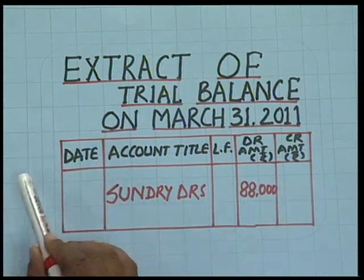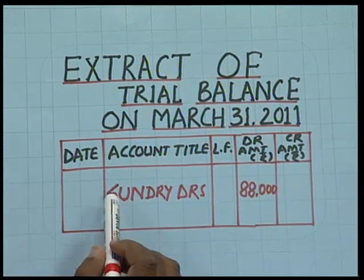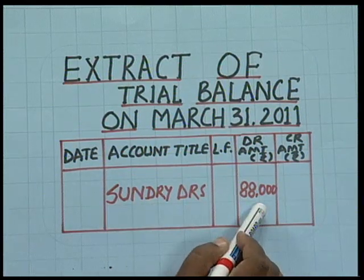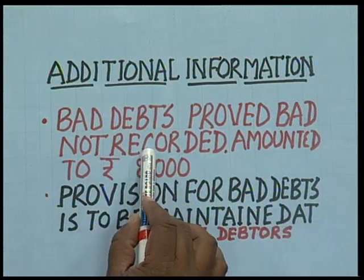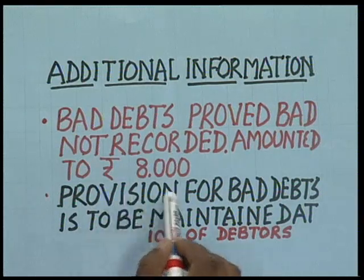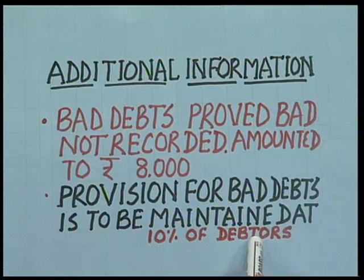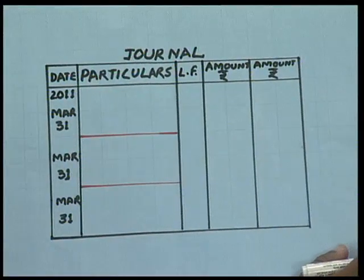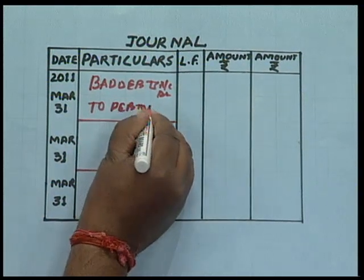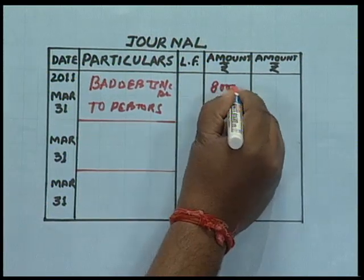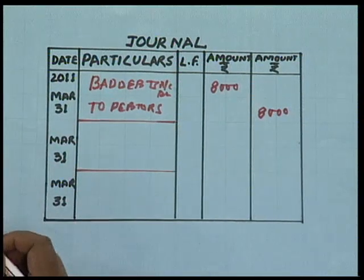Let us work through a practical example using an extract of a trial balance as at March 31, 2011. The sundry debtors are valued at Rs. 88,000. The additional information states that bad debts proved bad but not yet recorded amount to Rs. 8,000, and a provision for bad debts is to be maintained at 10% of debtors. First, we pass the entry for the unrecorded bad debts: Bad Debts Account Dr. to Debtors Account — Rs. 8,000. This bad debts figure will be shown on the debit side of the profit and loss account.